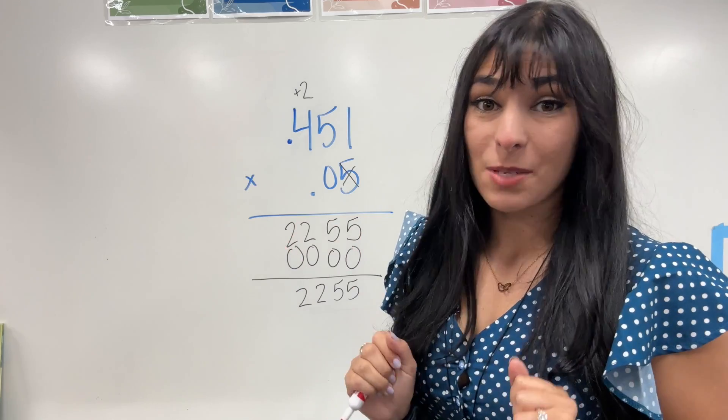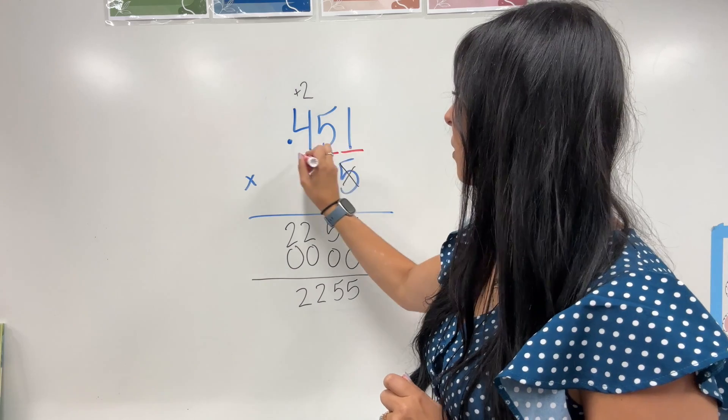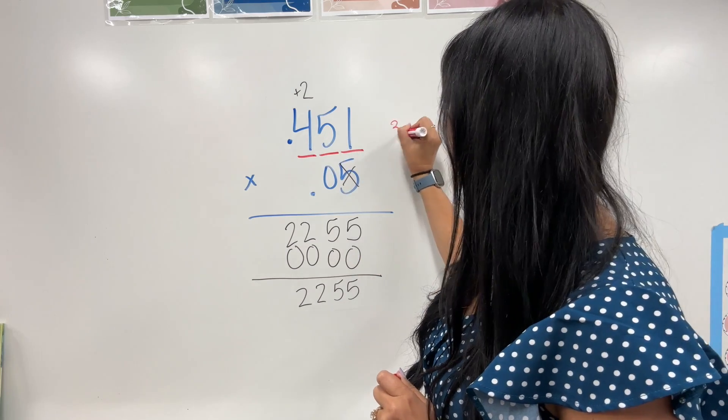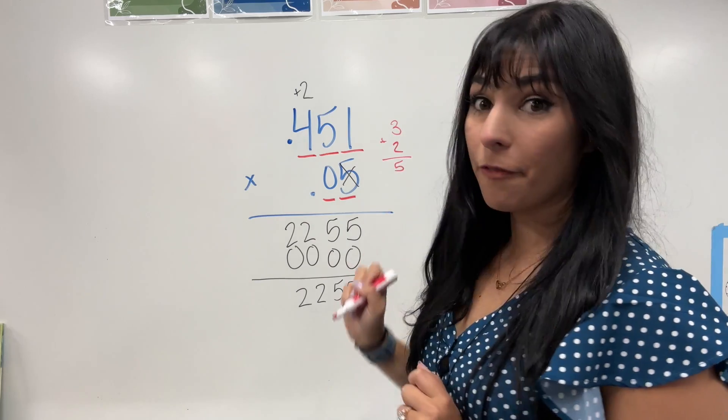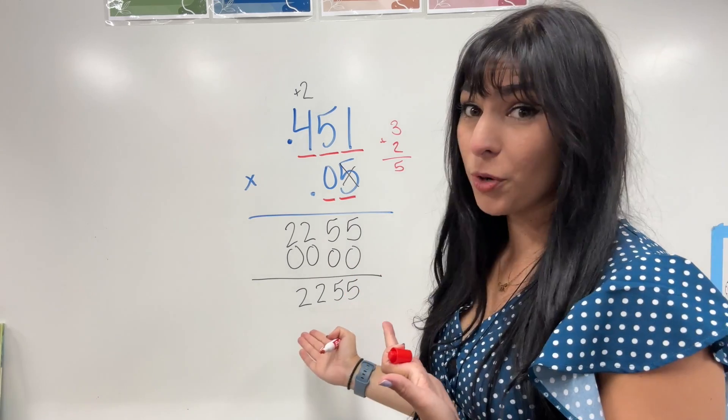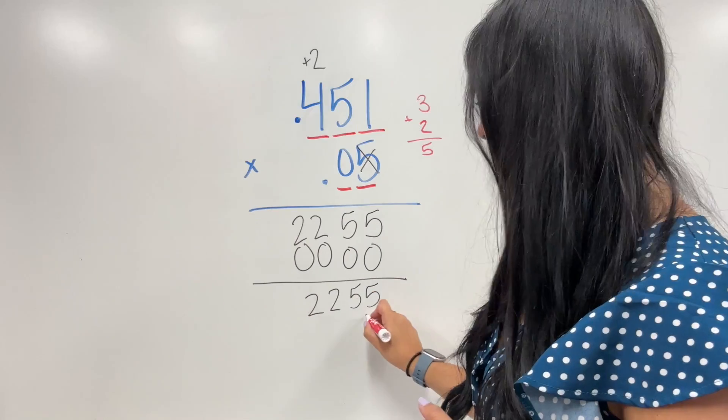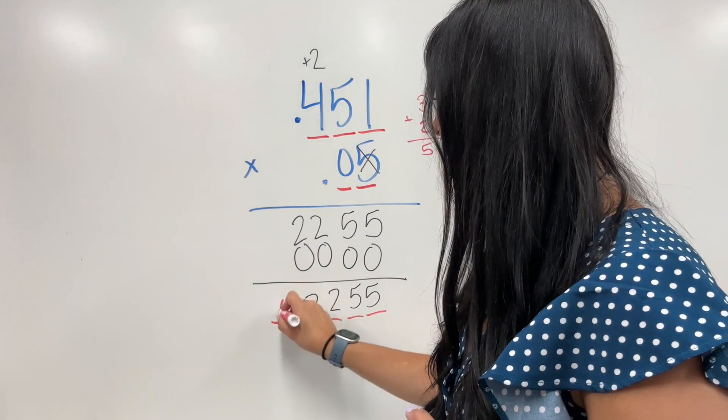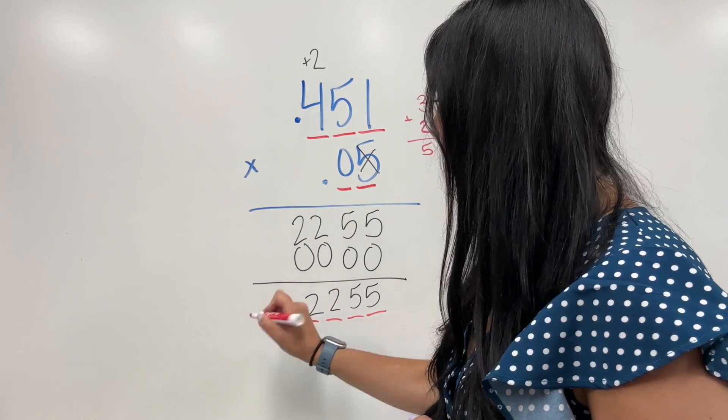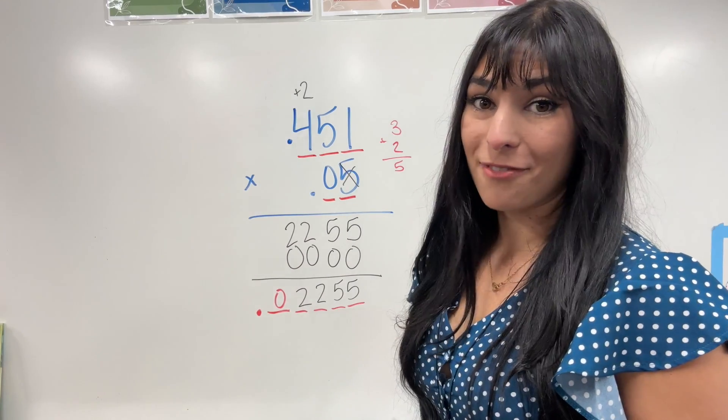Now here's where the decimals come in. We're going to count how many spaces to the decimal in each factor. This one has 3, this one has 2. That means I have to move 5 spaces. Well, I only have 4 digits. You still have to move over that many spaces, you're just going to add a zero. So we have 1, 2, 3, 4, 5. I'll add that zero, and then my decimal is going to go in front of it. Our answer is 0.02255.